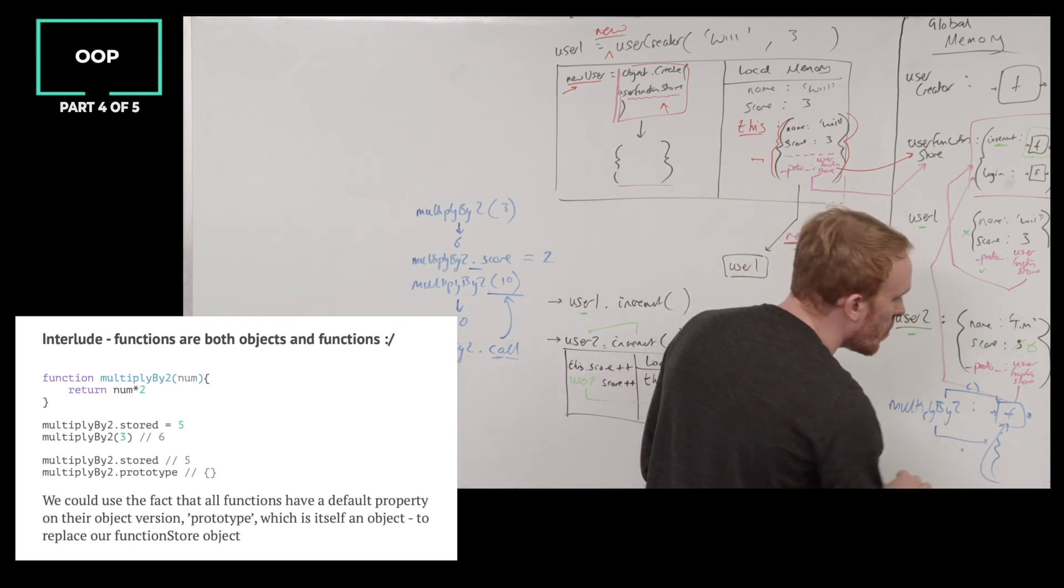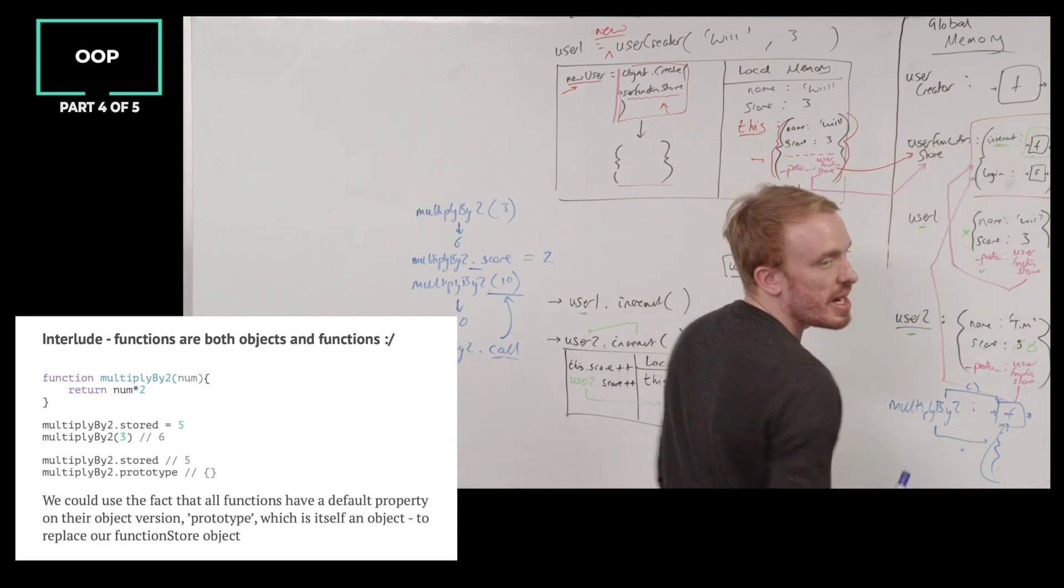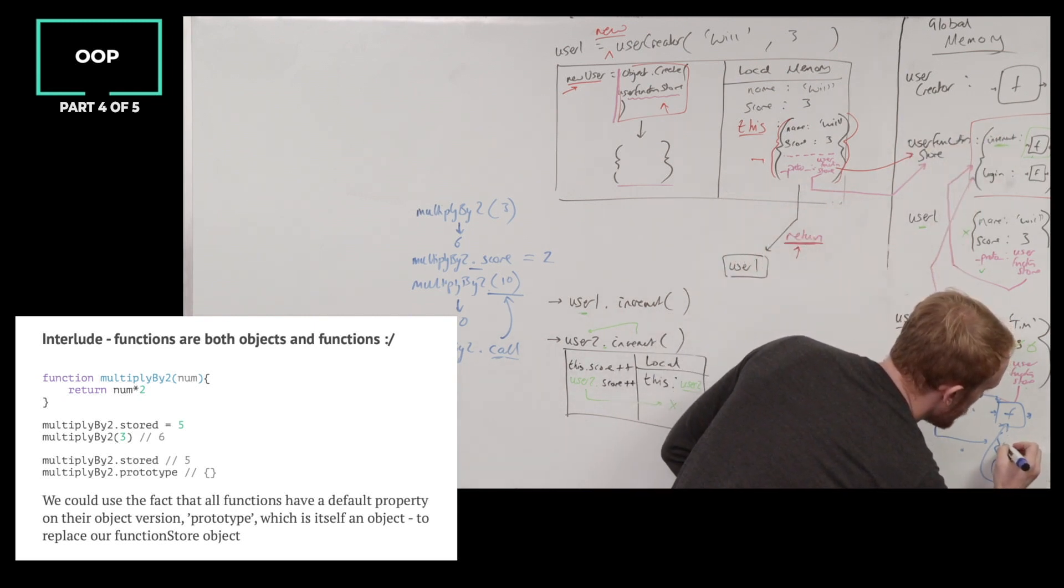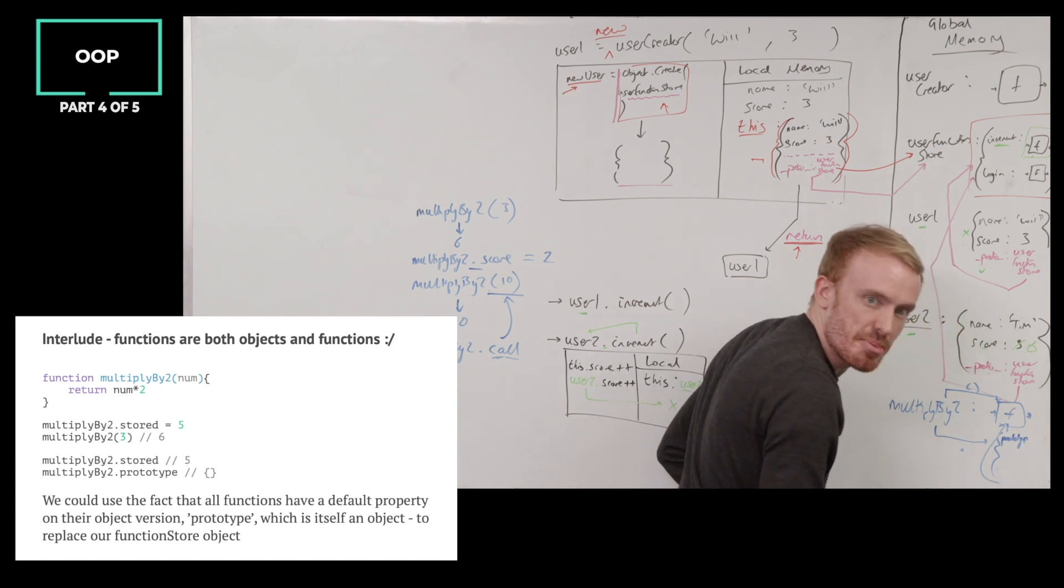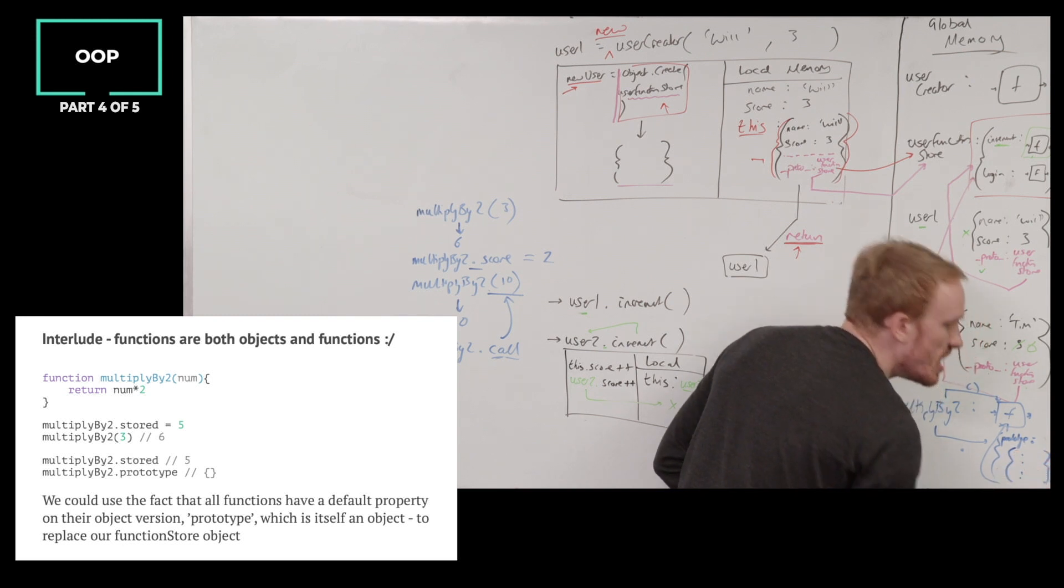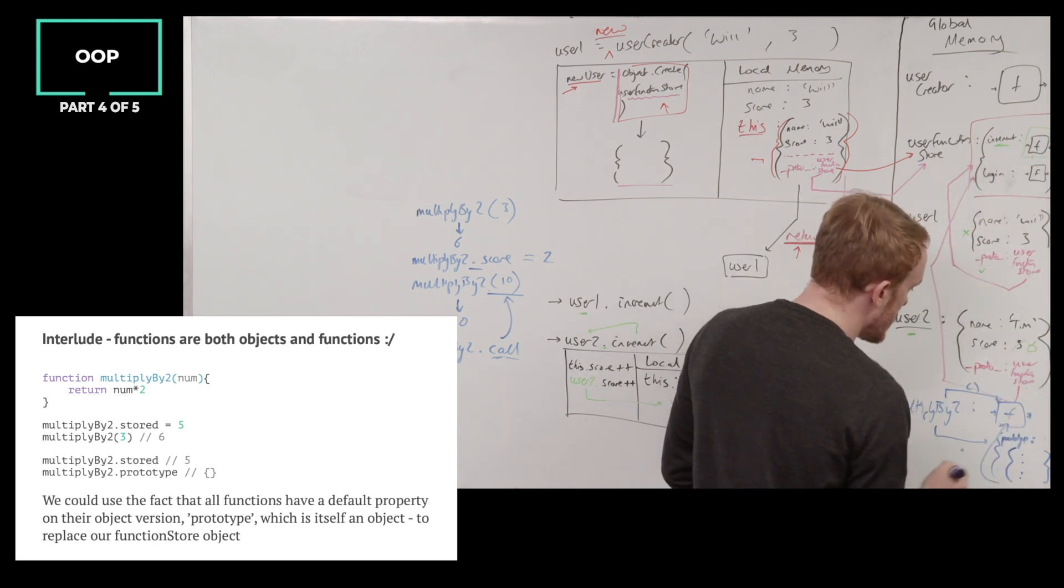And that is actually exactly what we're going to see happens, is that all functions, by default, are also objects, and all of them have, by default, a property on them, known as prototype. It's a regular property on an object, which itself is another object in which we have nothing currently, but in which we could store all of our shared functions.